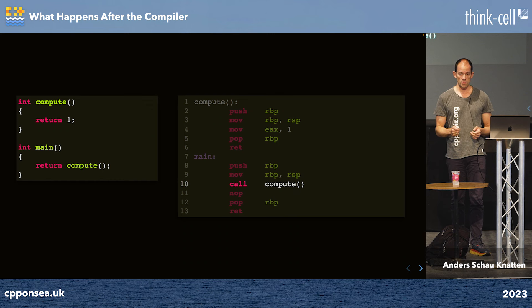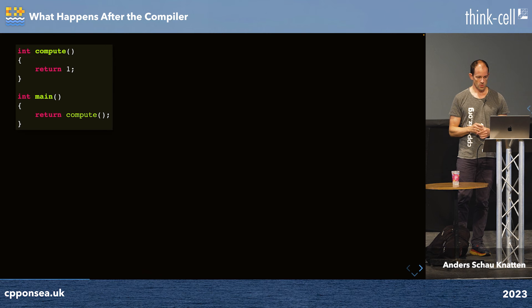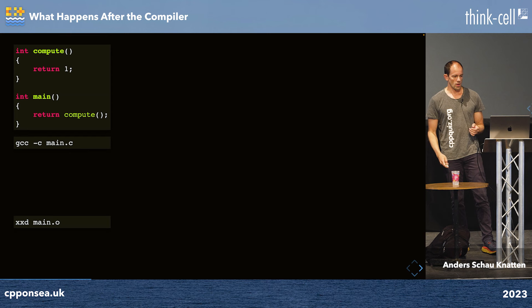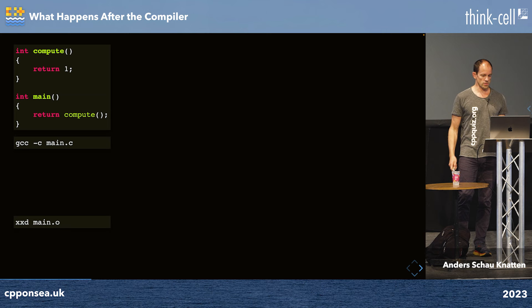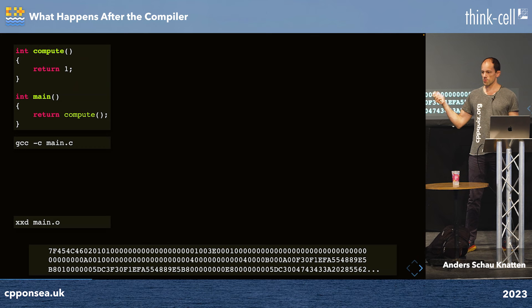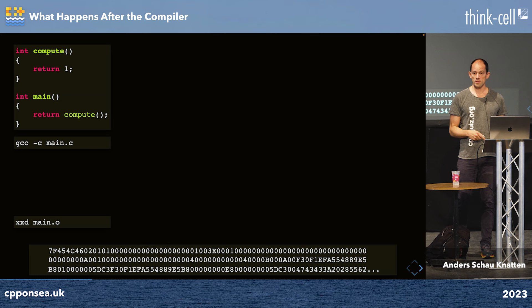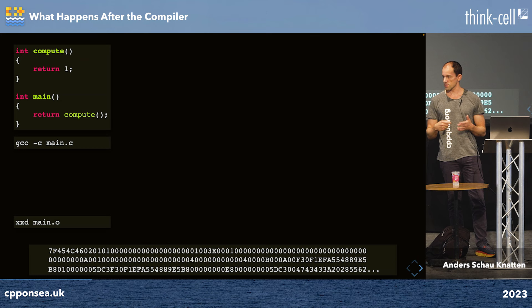Here's the same program again. I can compile it into an object file without linking it into an executable yet — just compile it — and I want to look at it. I'll start with just hex-dumping this object file, and here's how it looks. Can anyone read any of this? There is one little thing you can read: 0x7F is a magic number, then it goes the ASCII code for E, L, and F. That's the Executable and Linkable Format on Linux — the format of your object files, executables, and shared objects.